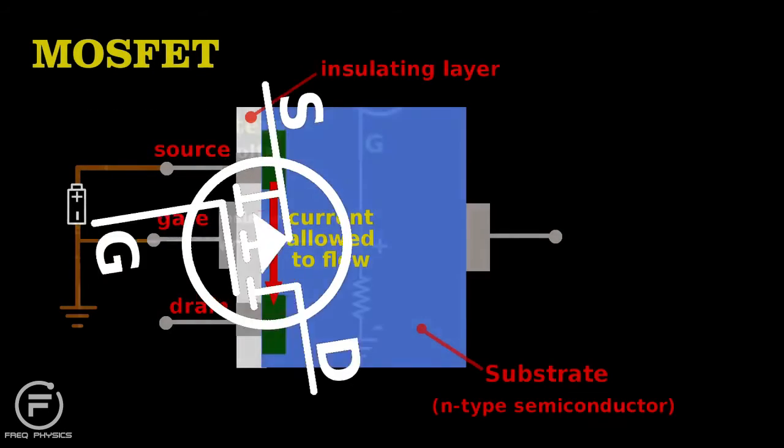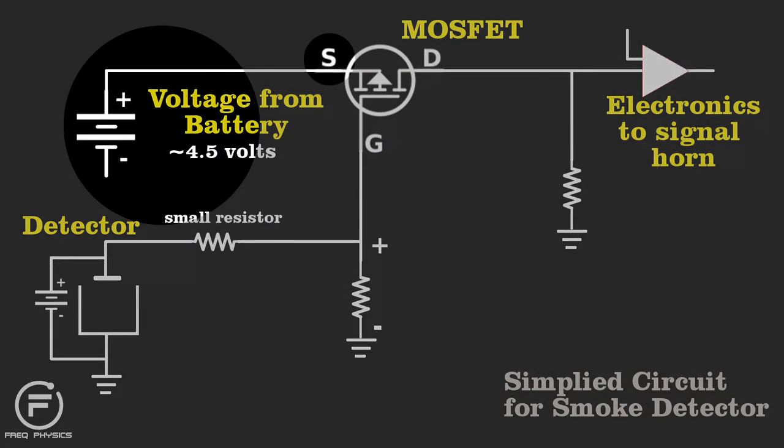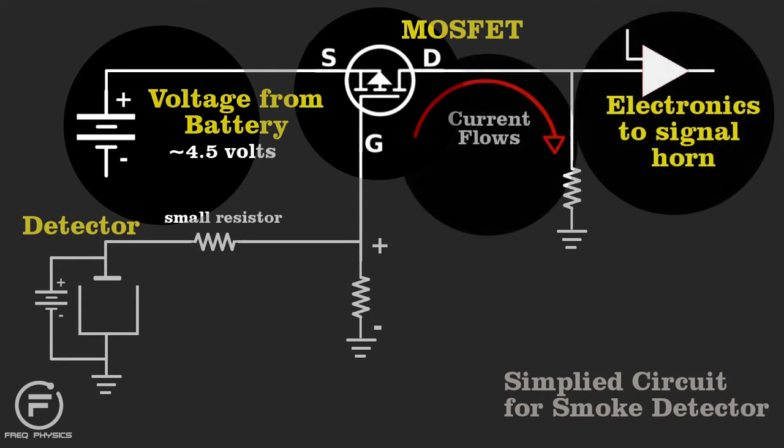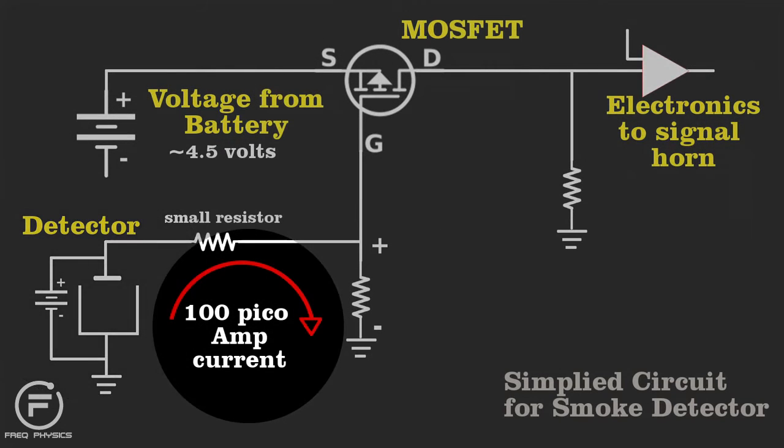In a circuit, we use the 9-volt battery to generate a potential difference between the source and the gate. It biases the gate so that the current flows through the MOSFET, thus turning on the horn. So we counter that with a current flowing from the detector.